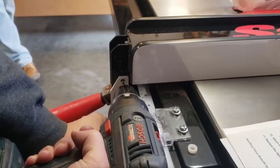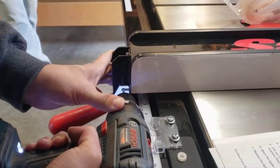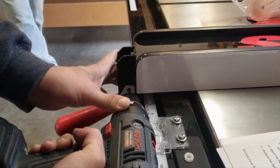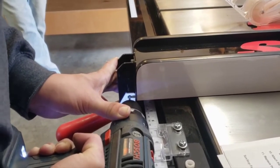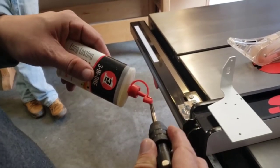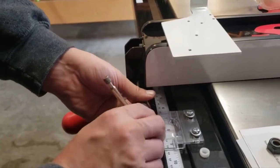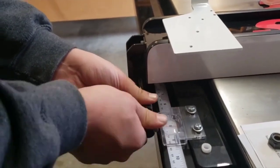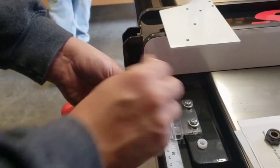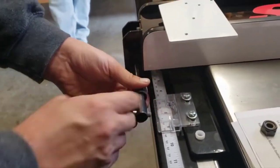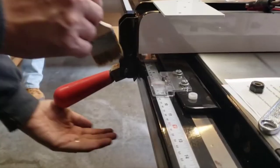Drill the marked position with a number 7 drill bit. Tap this hole with a ¼-20 thread tap. Brush away any scraps.